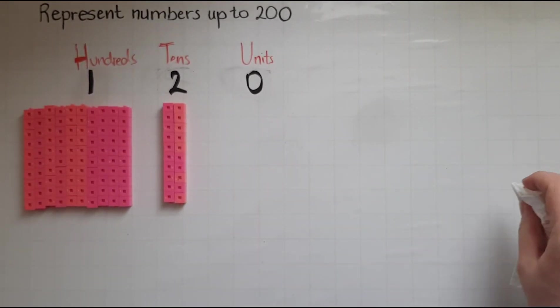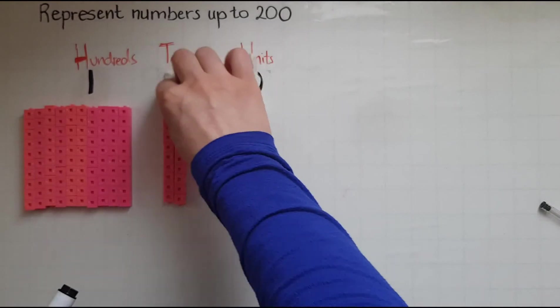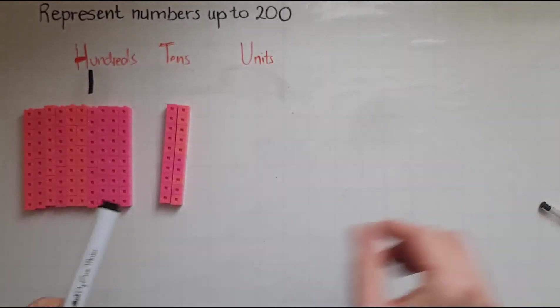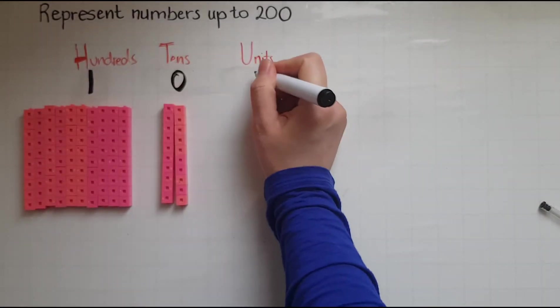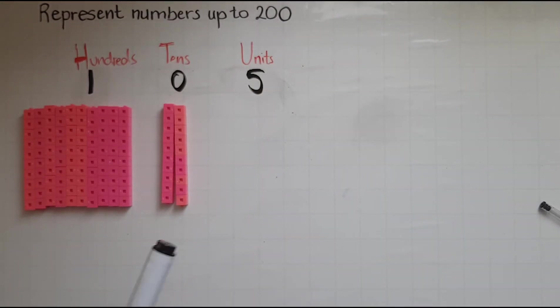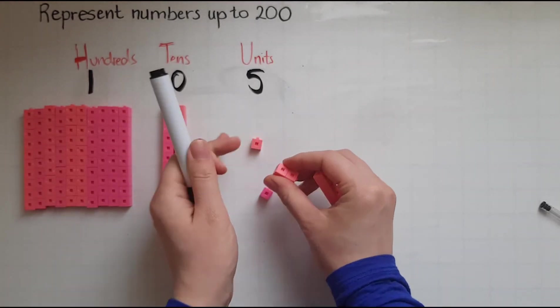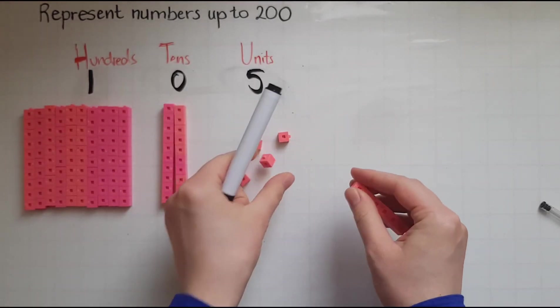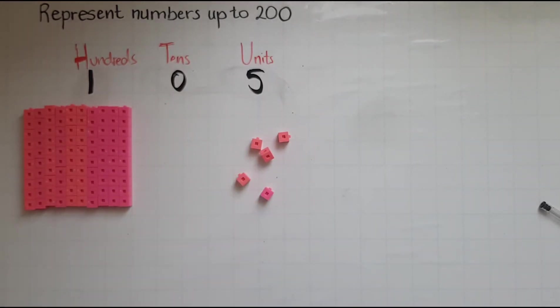What would I do to represent the number a hundred and five? So a hundred and five. That suggests that I've got five single cubes. One, two, three, four, five. And I've got no tens. So this is how I represent a hundred and five.